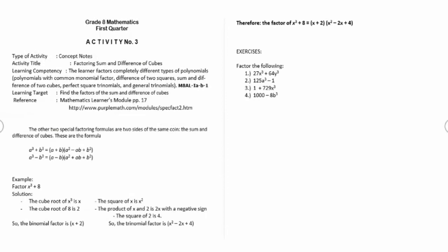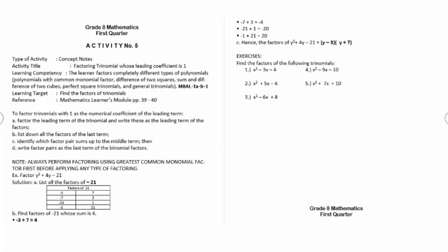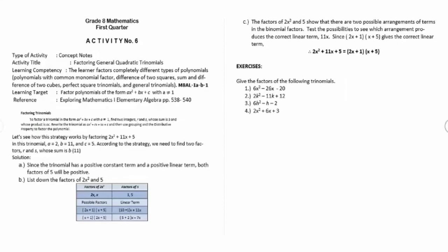Activity number three is factoring sum and difference of cubes. Activity number four is factoring perfect square trinomials. Activity number five is factoring trinomial whose leading coefficient is one. Activity number six is factoring general quadratic trinomials.